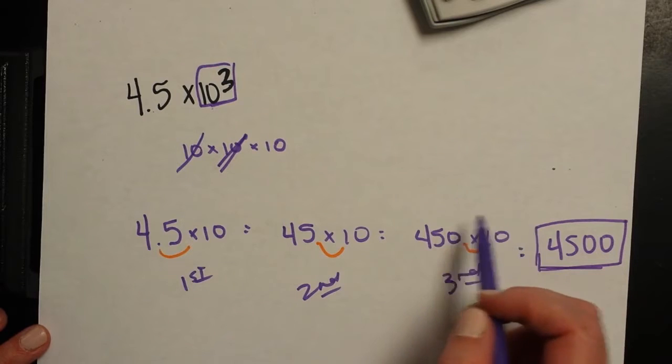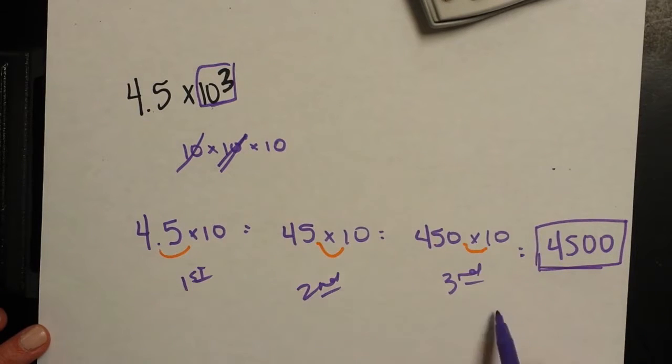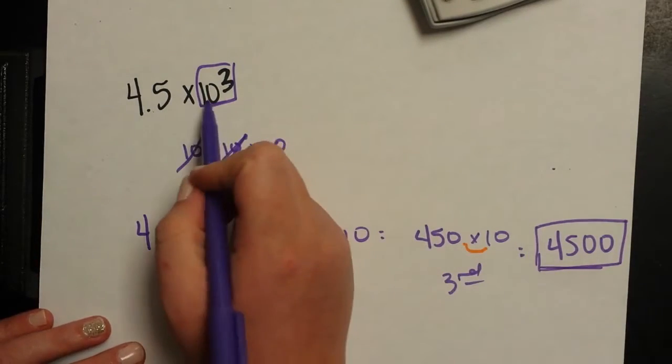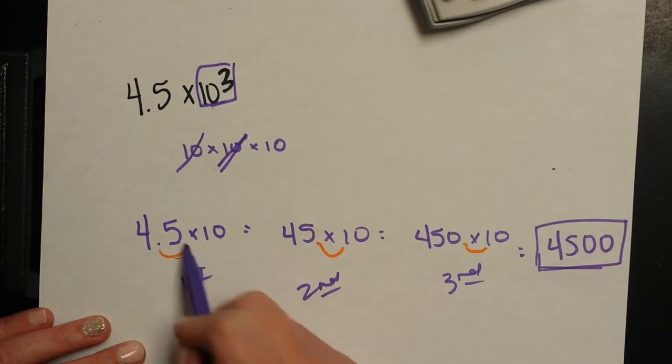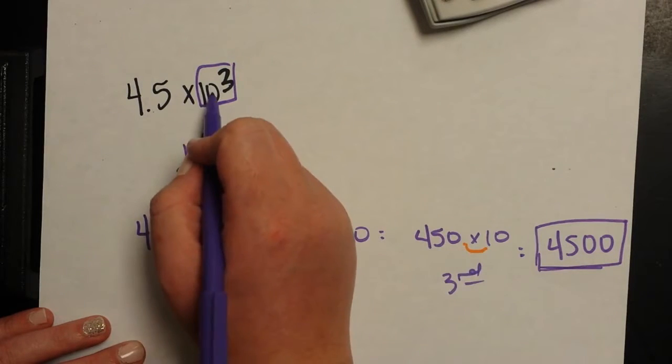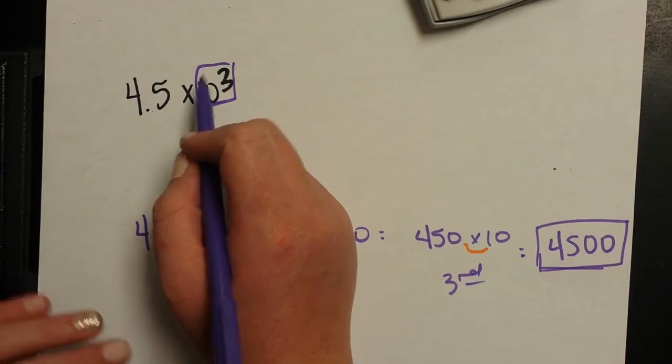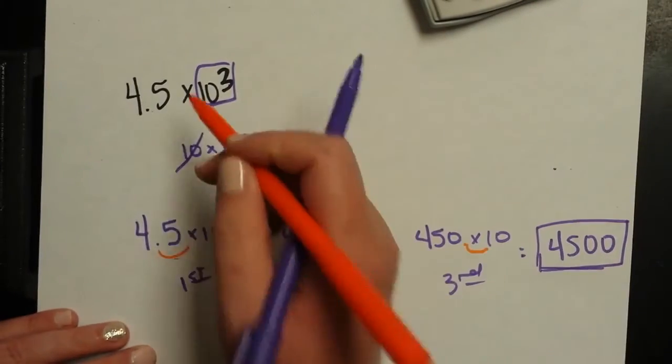Now, again, just like I did in the first two slides, you don't have to show this work here. This is to help explain why this is written the way it is. You could have just as easily said, well, I know that I move my decimal place to the right one time for every time that I multiply by 10. So I'm going to move it three times, apparently.